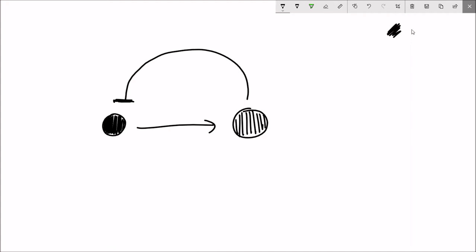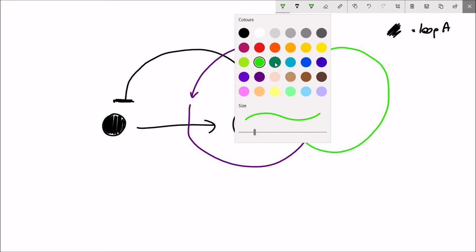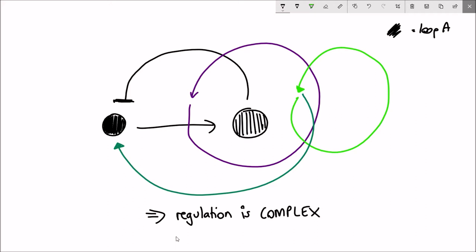It is thought that the synthesis and then repression of synthesis is what coordinates the 24-hour time scale of the circadian clock. But this is just one loop of three main interconnected loops that help to coordinate and keep the robustness of this 24-hour cycle.